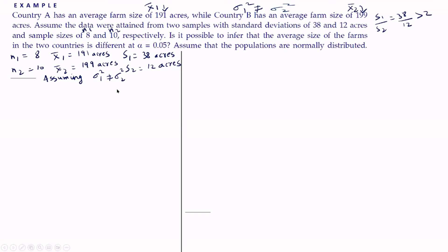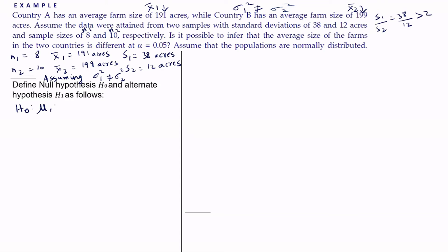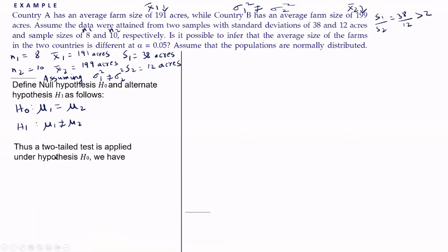Now let us write the hypotheses. H0: there is no significant difference between the average size of farms in the two countries, i.e., mu1 = mu2. H1: mu1 ≠ mu2. Since the alternate hypothesis uses 'not equal to,' it is a two-tailed test. Under H0 we have t = (x1 bar − x2 bar) / root of (s1²/n1 + s2²/n2).